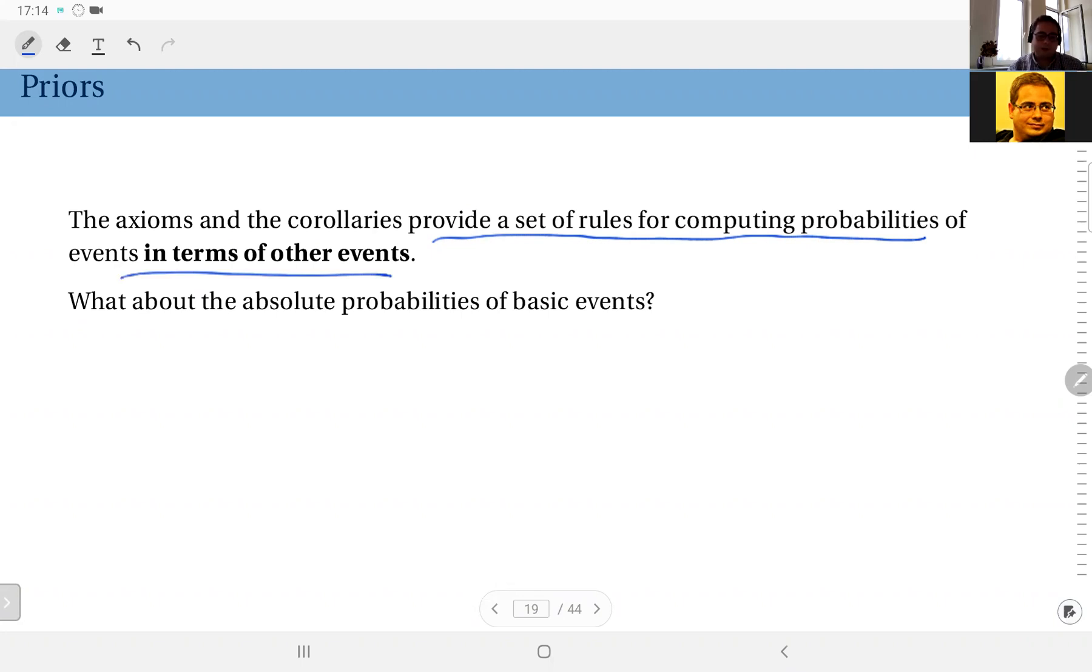So if you know the probability of A, if you know the probability of B, if you know the probability of A intersection B, then for instance you can compute the probability of A union B.